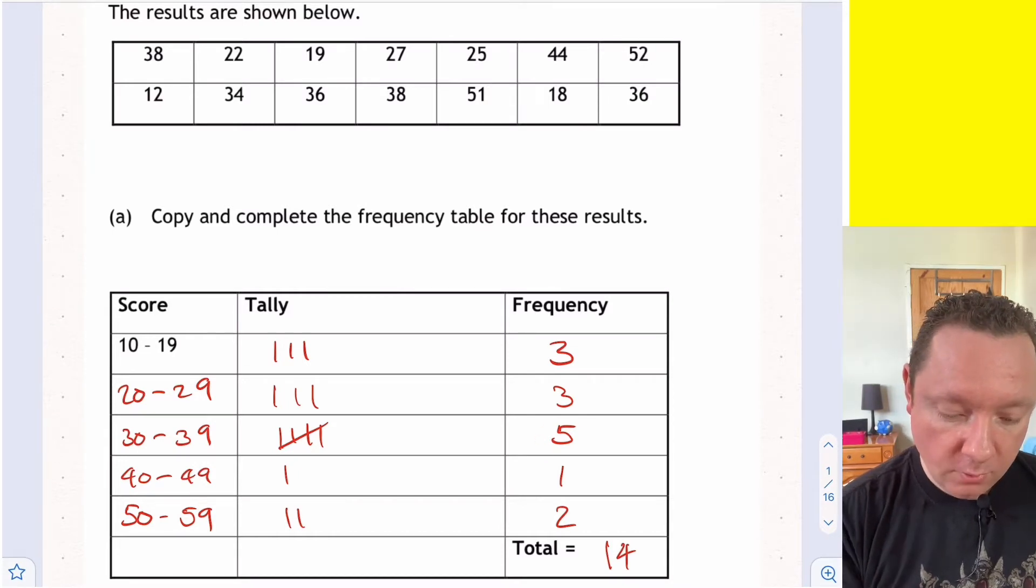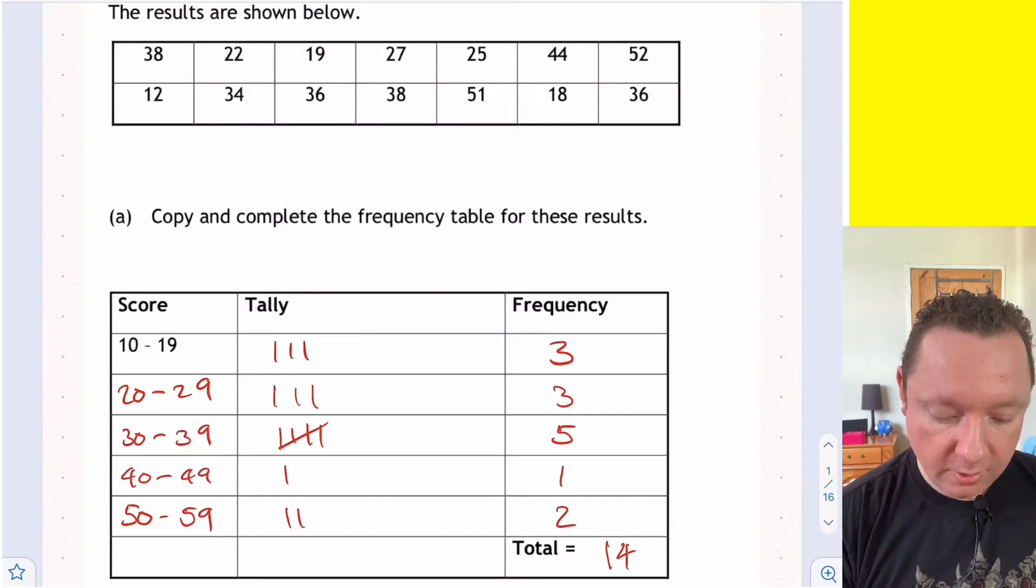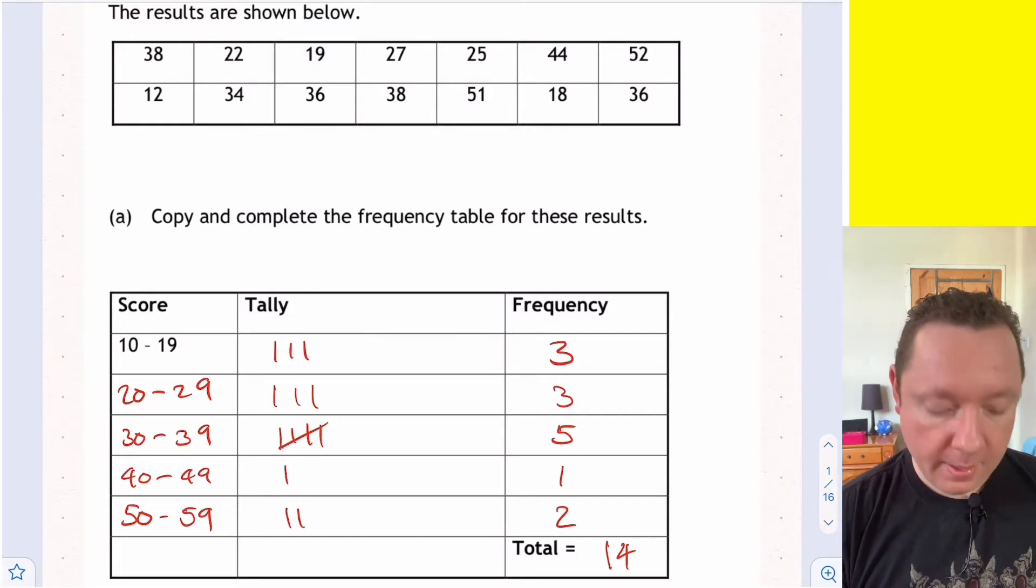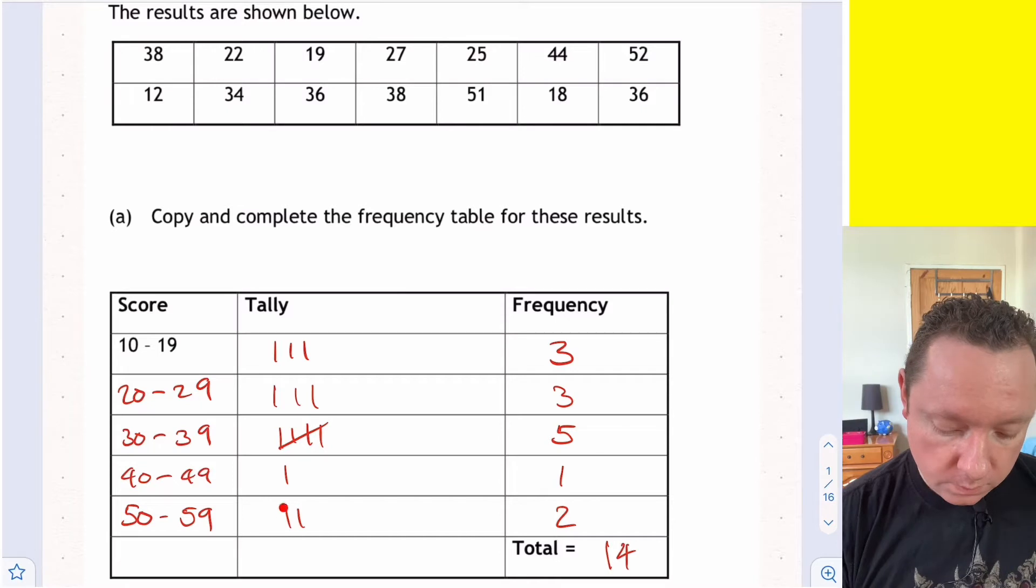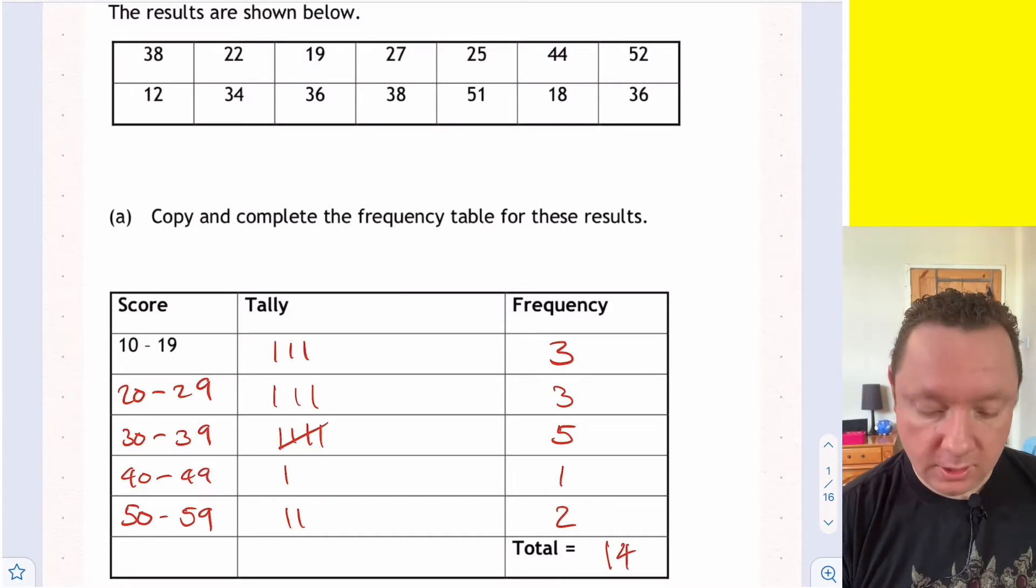40 to 49, well if you look up here there's only one number that's between 40 and 49, so a tally of 1, total of 1. 50 to 59, well we've got 1 here, 2. Total just means add up your frequency or your tally: 3, 6, 11, 12, 13, 14.